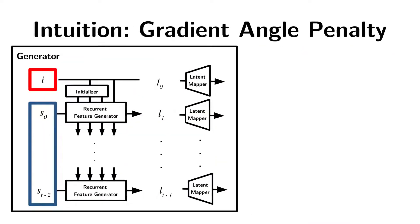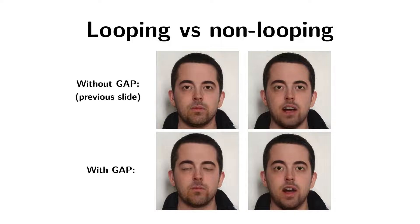To prevent this, we have a look at the difference d between the first latent code and last latent code produced within our generator. If we compute the gradient of d with respect to i and with respect to s, we observe that the two-dimensional arrow defined by these components usually points exclusively into the direction of i. That's why we penalize angles of this vector that are lower than some threshold. The resulting videos are much less likely to contain looping.